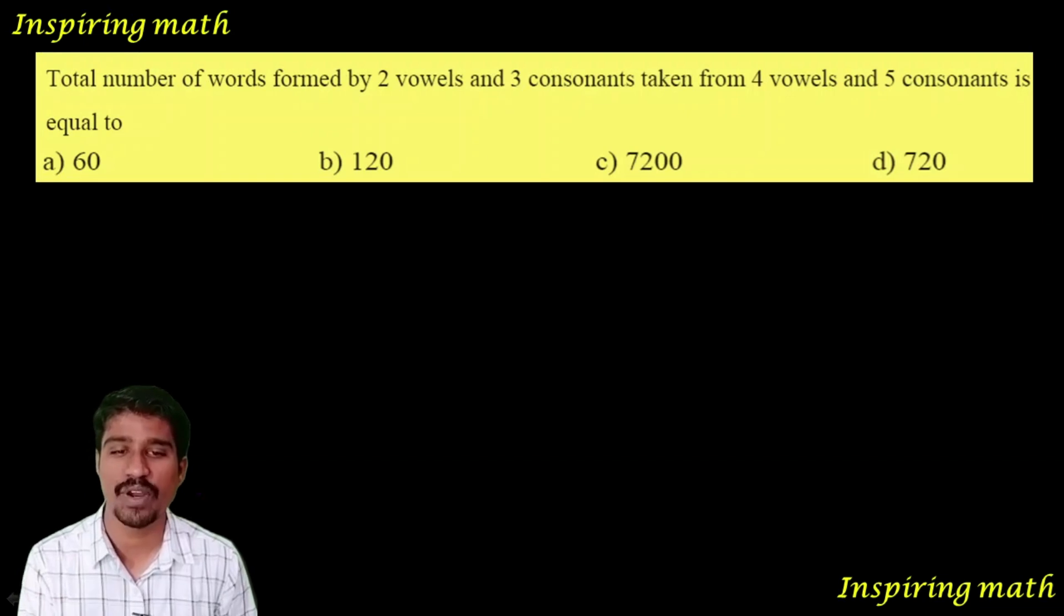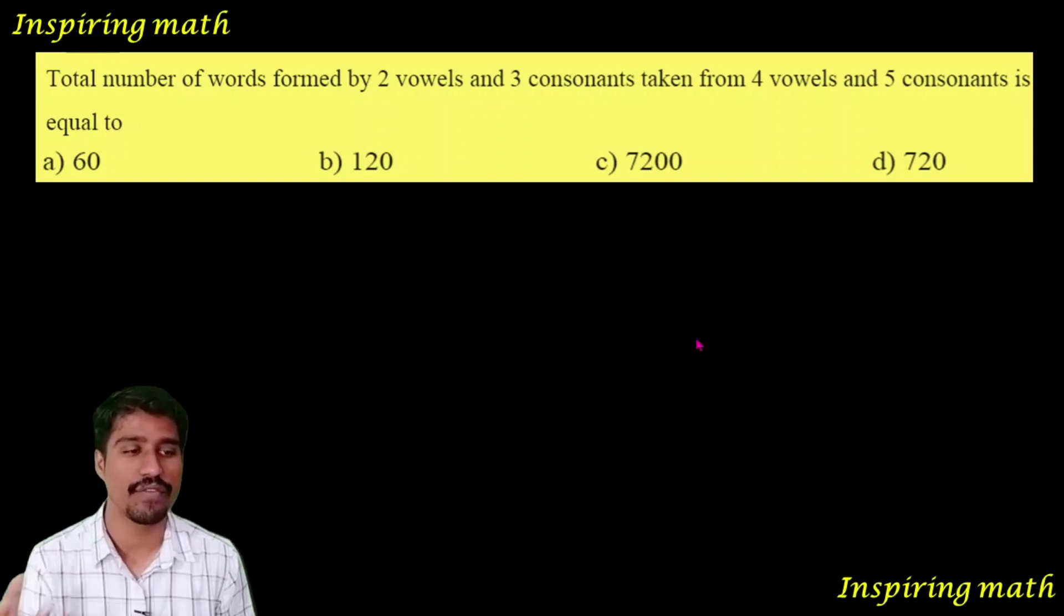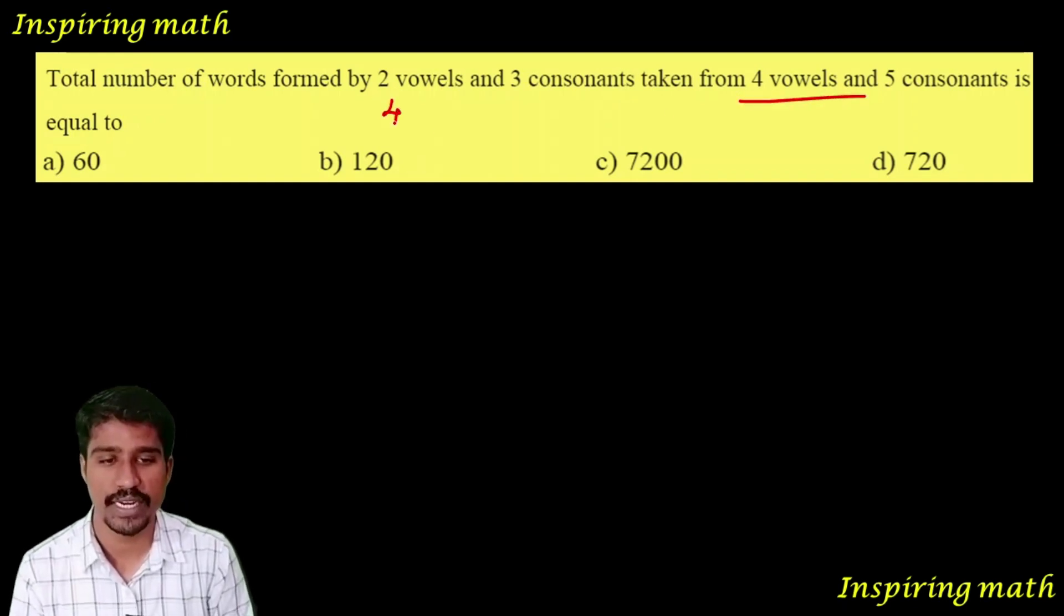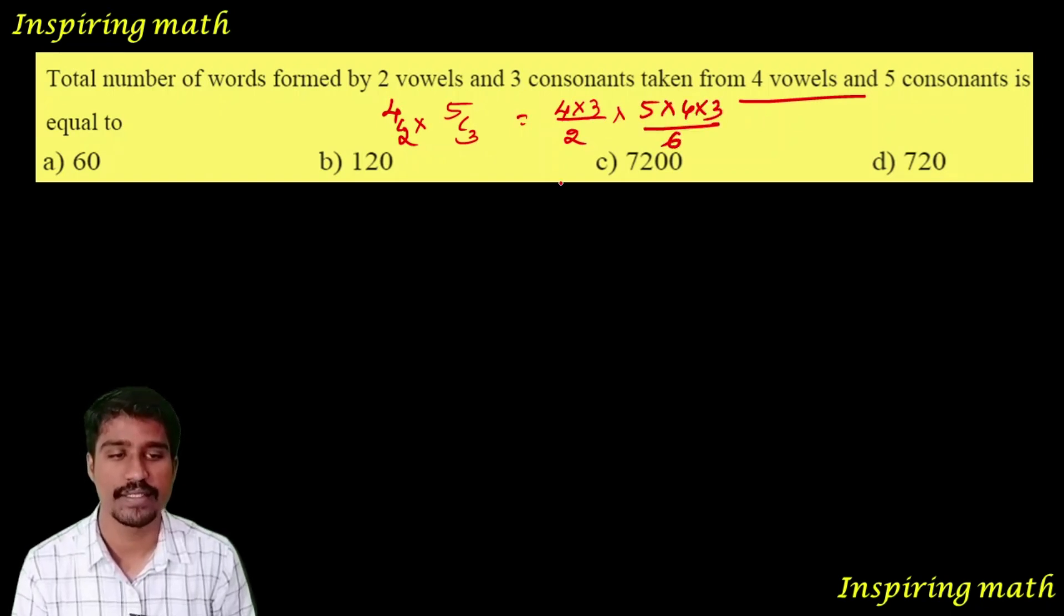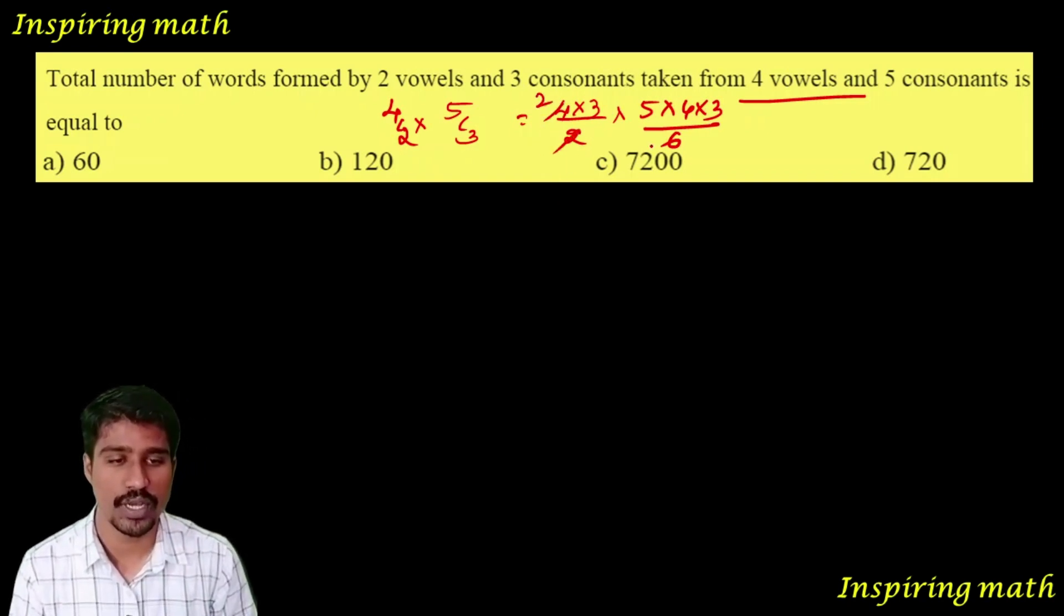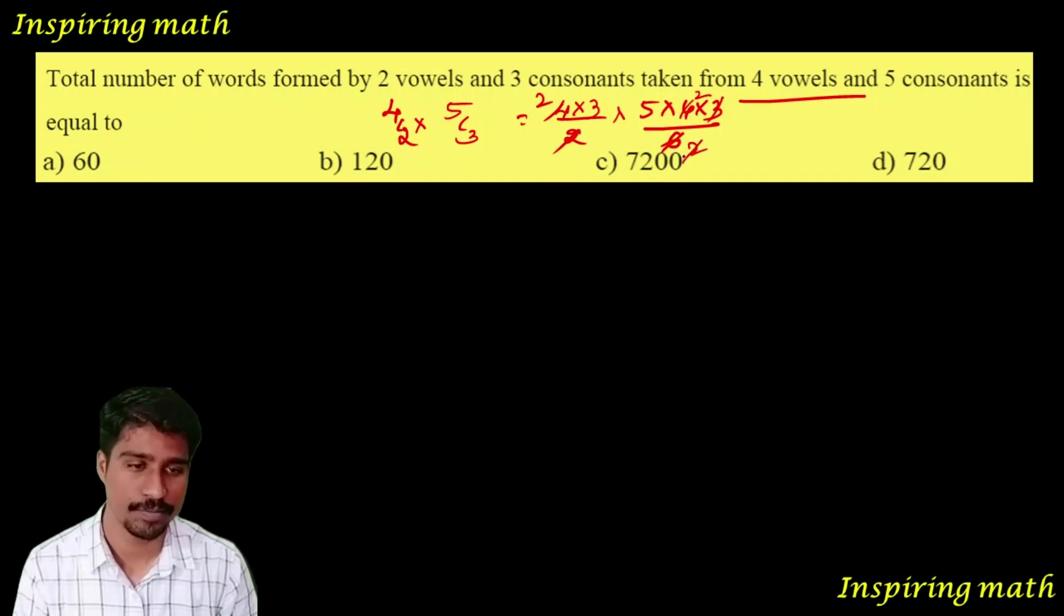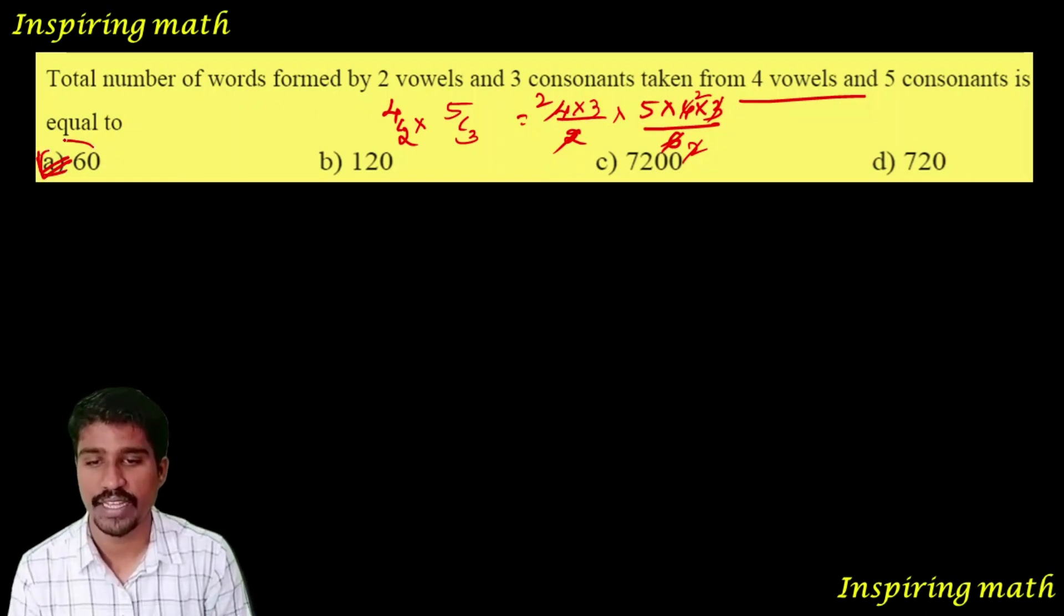The total number of words formed by 2 vowels and 3 consonants taken from 4 vowels and 5 consonants. 4 vowels choose 2 is 4C2, 5 consonants choose 3 is 5C3. That's 4 into 3 divided by 2, times 5 into 4 into 3 divided by 6, which equals 60. Option A is your answer.